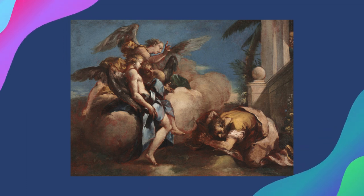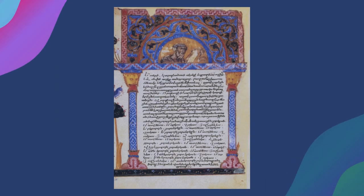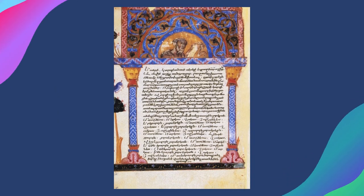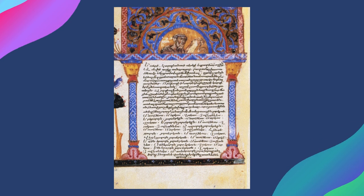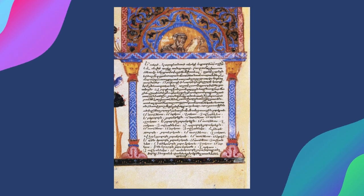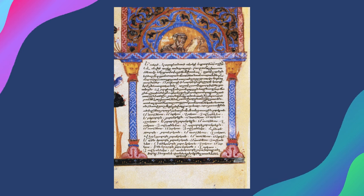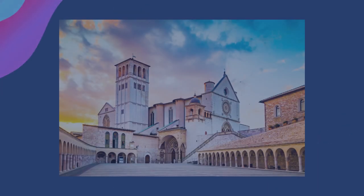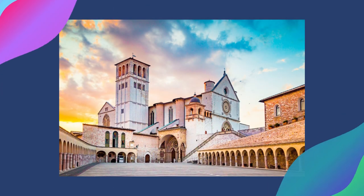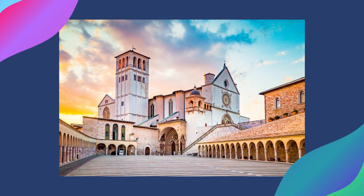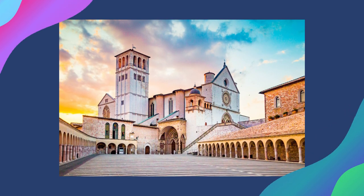Later on, Eusebius of Caesarea clearly distinguished between the cult of angels and the worship of God. At the same time, St. Ambrose recommended praying to angels. From the 5th century, churches were dedicated to angels, especially in Umbria and in the East. Churches were built in honor of St. Michael. Archangels Michael and Gabriel were also invoked in the most ancient litanies, after the persons of the Trinity and immediately before the Blessed Virgin.